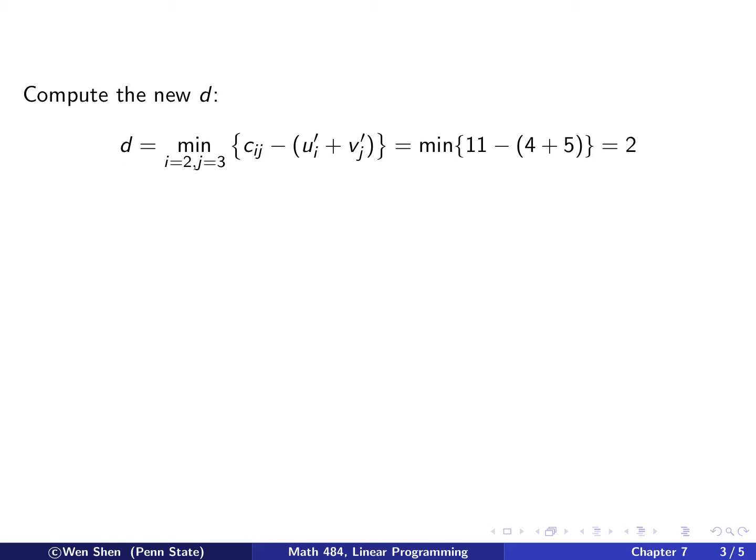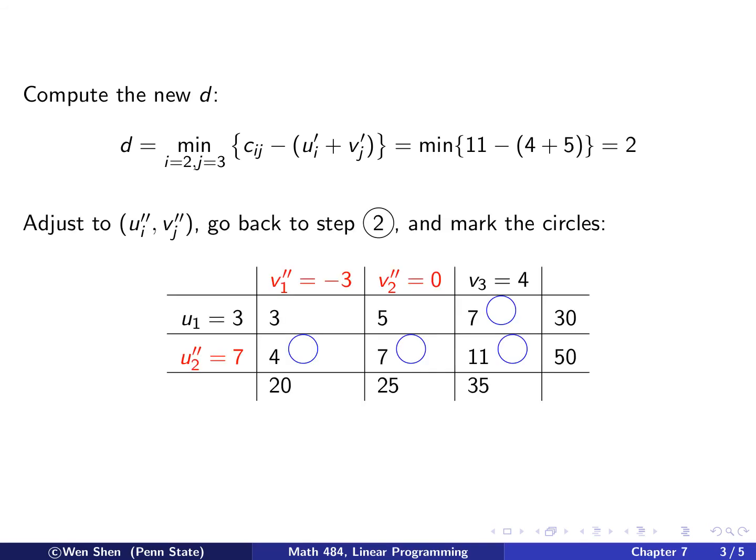Now we need to compute the d. We need to iterate this one more time. So follow the definition. The d is computed minimum of this quantity over i in 2 and j not in 1 and 2. So j is 3. So actually there's just one number. 11 minus 9, which is 2. So d equals 2.